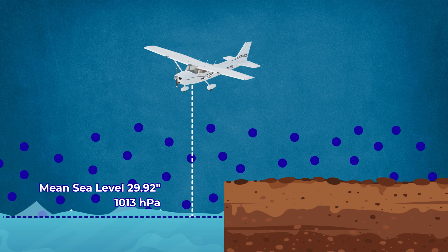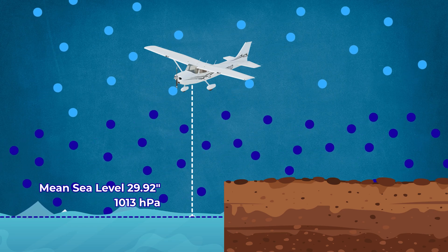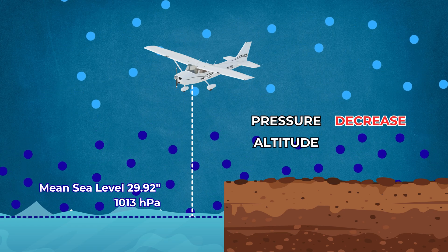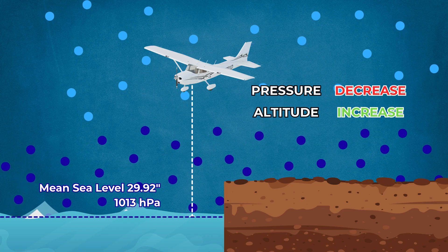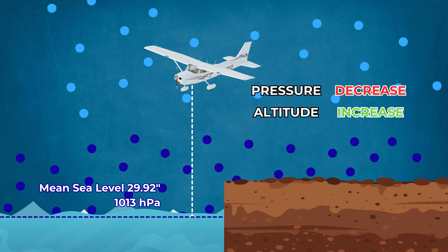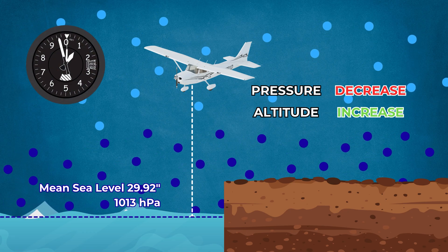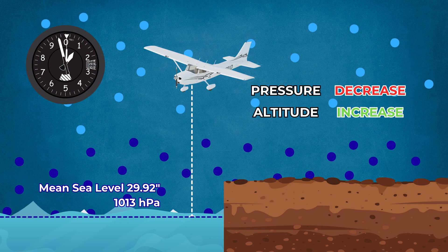Air is denser at sea level than aloft, so pressure decreases as altitude increases. In most flights below flight level 180, your goal is to set your altimeter so that it reads out your aircraft's height above mean sea level.